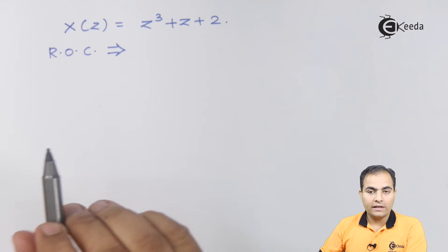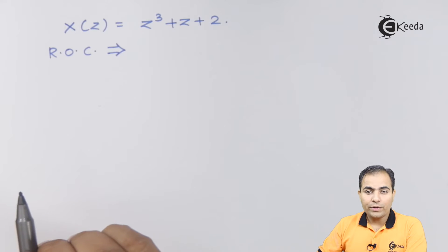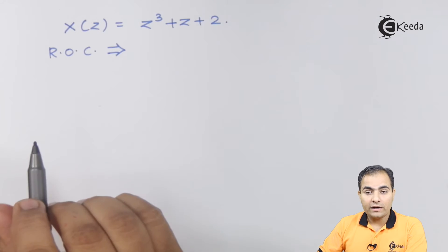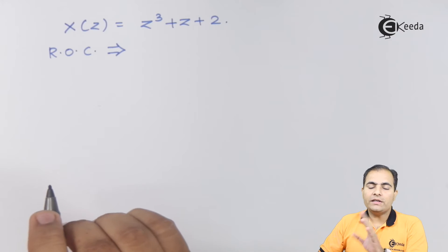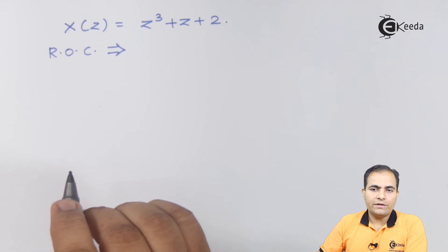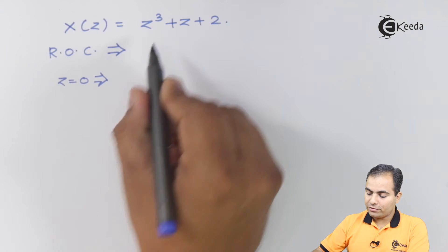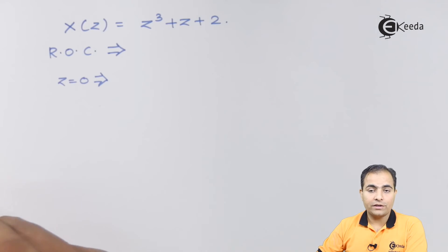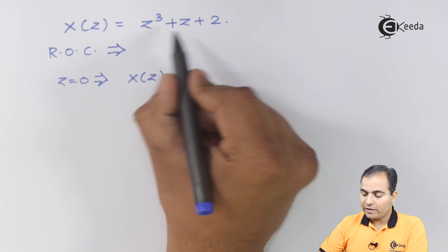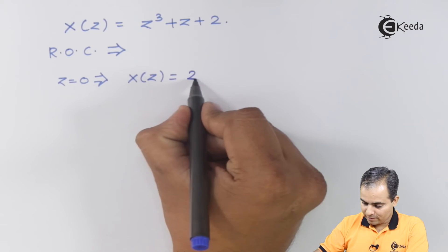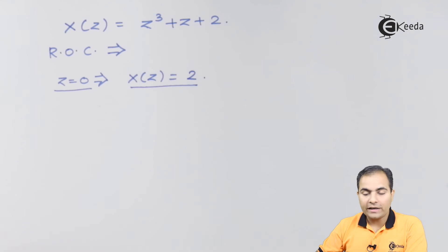To find the ROC, we substitute the two extreme values into X(z): z equals zero and z equals infinity. If I substitute z equals zero into X(z), both z³ and z¹ become zero, giving us 0 + 0 + 2 = 2, which is a finite result. So at z equals zero we get a finite result.